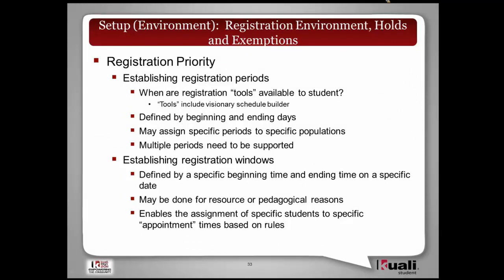Registration priority is broken down into two different parts: registration periods and registration windows. Registration periods are the broad points in time — you define beginning and ending days and may assign specific periods to specific populations. For example, athletes might get the first registration period, graduating seniors a high priority, and incoming freshmen the last priority. You have the ability to set the period for a specific population, and multiple periods need to be supported.